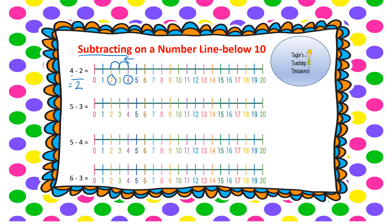Next question: 5 take away 3. We start with that larger number and jump backwards 3 spaces: 1, 2, 3. I land on 2, so 5 take away 3 equals 2. Next: 5 take away 4. Start with 5, jumping backwards 4 spaces: 1, 2, 3, 4. I've landed on 1, so 5 take away 4 equals 1.